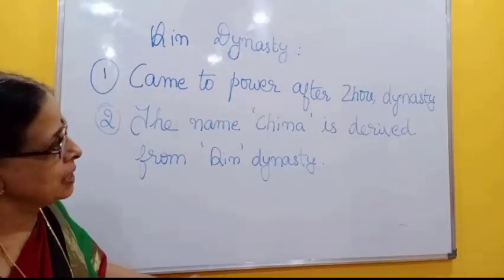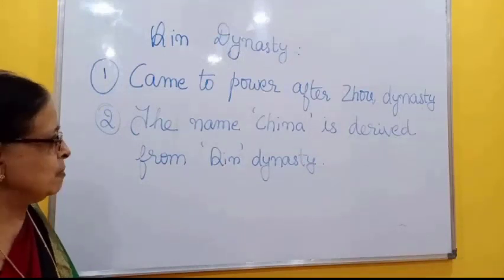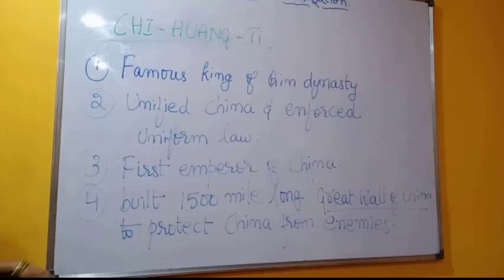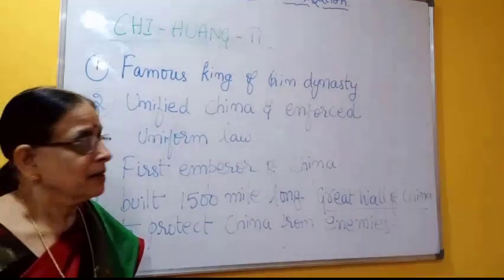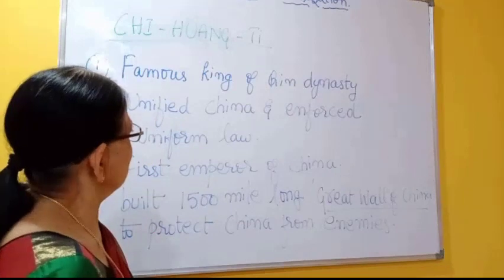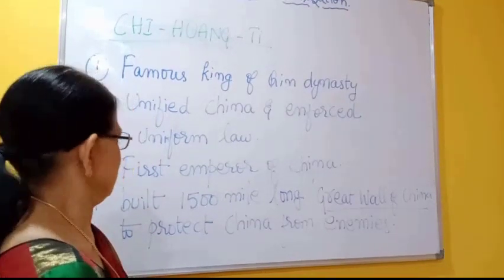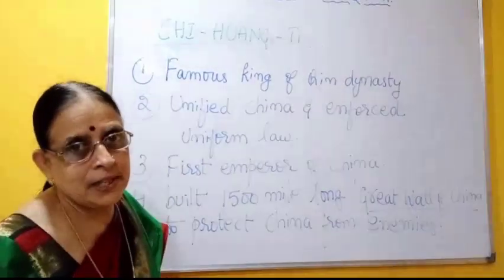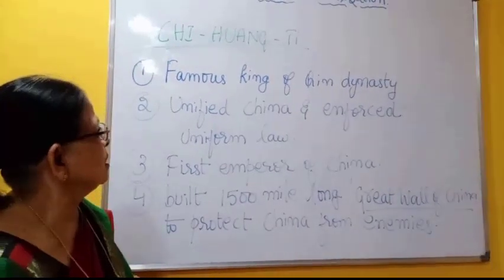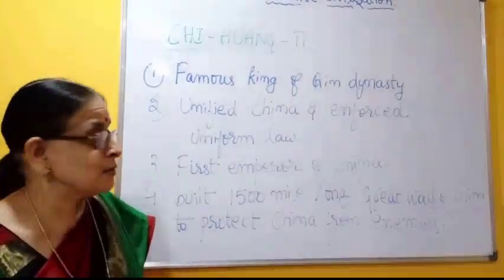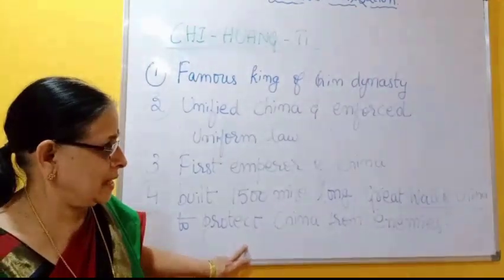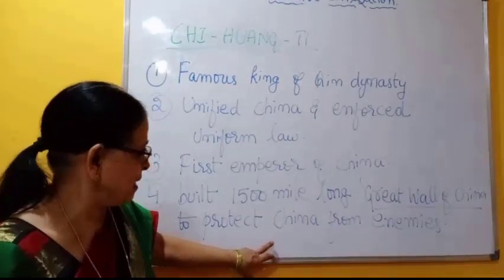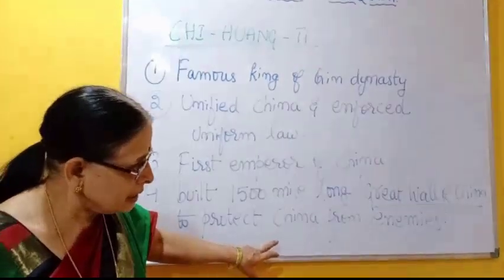Qin dynasty came to power after Zhou dynasty. The name China is derived from Qin dynasty. Chiang Ti was the famous ruler of Qin dynasty. He unified China and enforced uniform law, because there were different laws in China — he united China and brought uniform laws. He was called the first emperor of China. He built the 1,500-mile Great Wall of China to protect China from enemies. It is also called one of the seven wonders of the ancient world, and it still exists in China today.